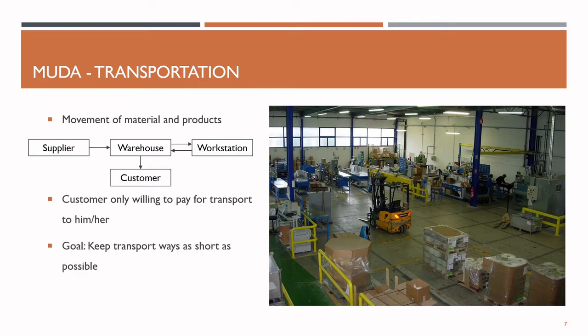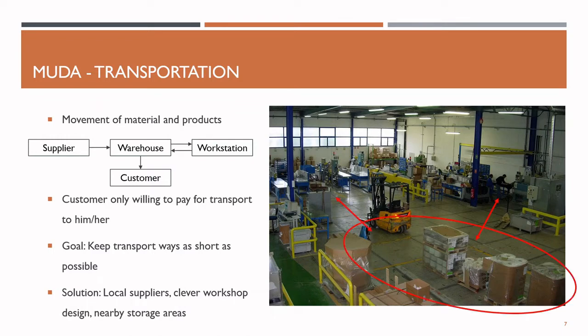We can reduce transport waste by utilizing local suppliers. Large automobile manufacturers sometimes even require their main suppliers to build their factories directly next to theirs. To minimize internal transport waste, we utilize a clever workshop design with storage areas close to the workstations, like in the image on the right. As we can see here, the material is only a few meters away from the workstations and doesn't have to be taken from a warehouse.